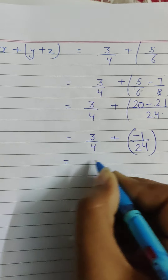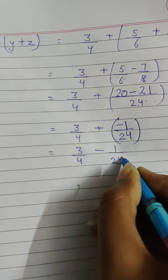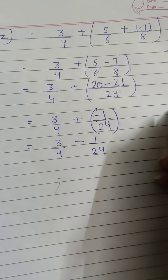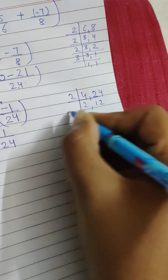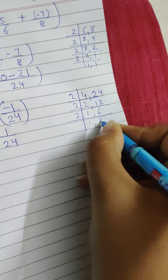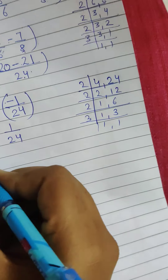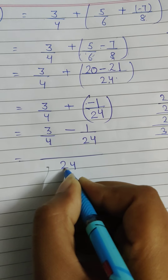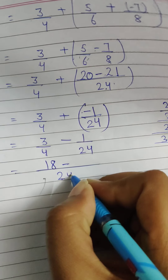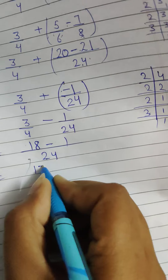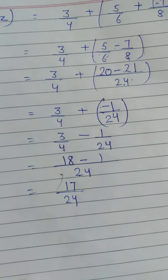Now we have three by four plus minus one by twenty-four. The plus minus becomes minus, giving three by four minus one by twenty-four. Finding the LCM of four and twenty-four: the LCM is twenty-four. Four table twenty-four is six, so six times three is eighteen. Twenty-four table twenty-four is one, so one times one is one. Plus minus becomes minus: eighteen minus one is seventeen. The answer symbol is that of the bigger number, which is plus, so the LHS result is plus seventeen by twenty-four.